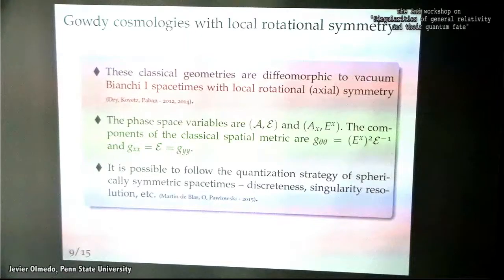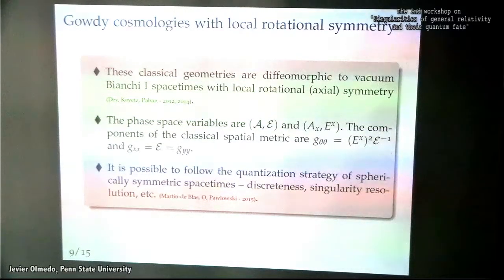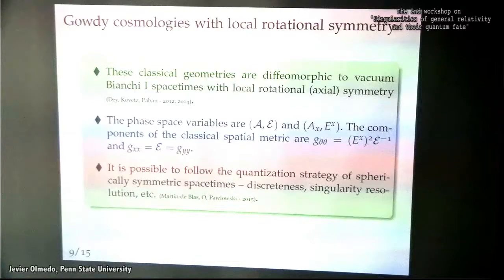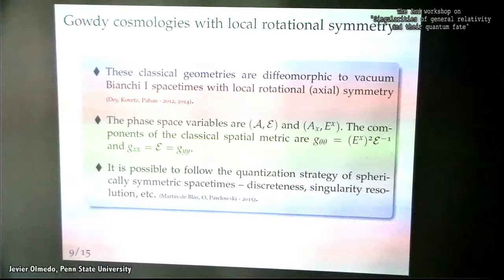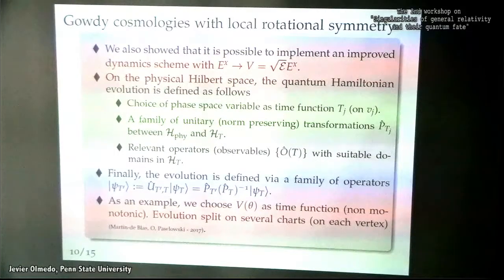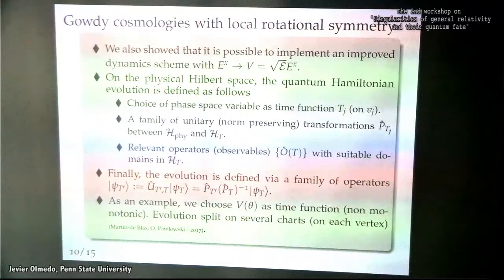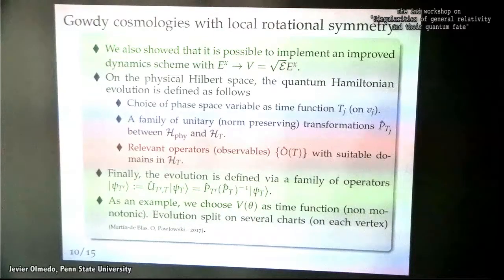All these techniques can also be applied for Gowdy cosmology with local rotational symmetry. These cosmologies are very interesting physically because they are diffeomorphic to Bianchi 1 spacetimes with axial symmetry or local rotational symmetry, and they were studied in the context of inflation by Sonia Pavan and collaborators several years ago. Again, you can get discrete geometries that are regular with very nice properties. We also propose, because we were not completely satisfied with the description using parametrized observables, to introduce a notion of Hamiltonian evolution in the quantum theory.